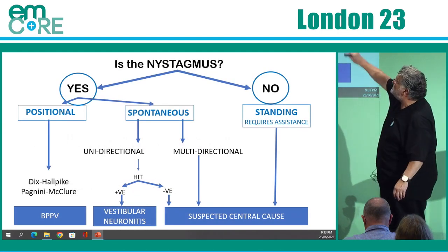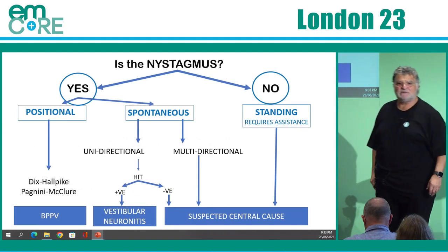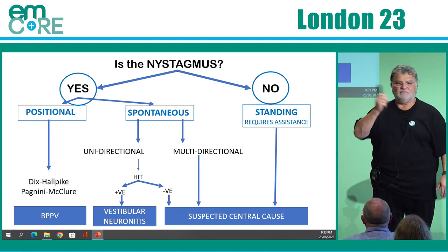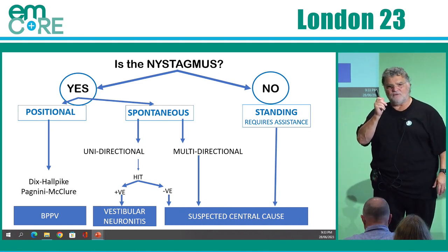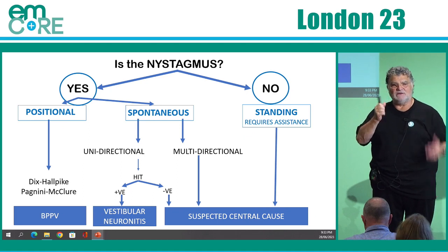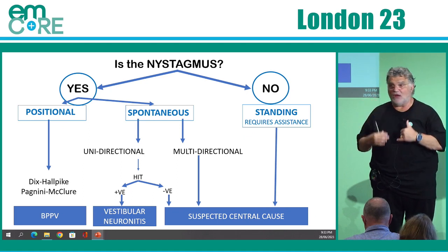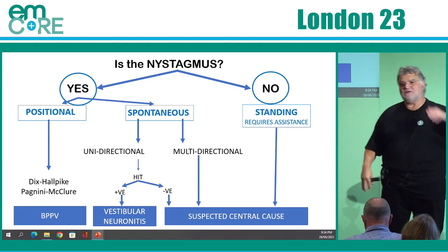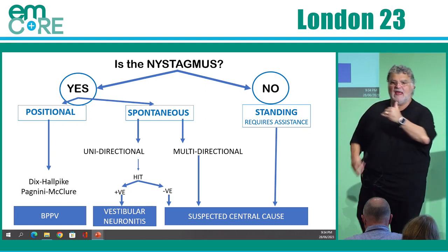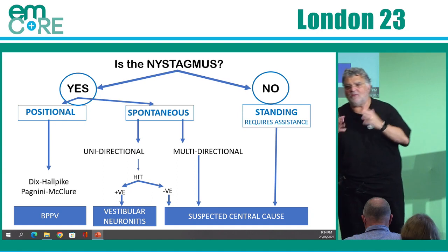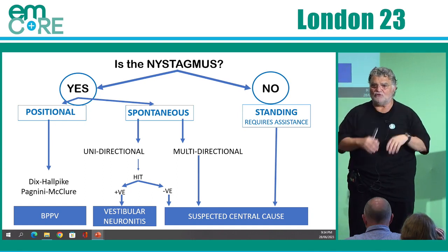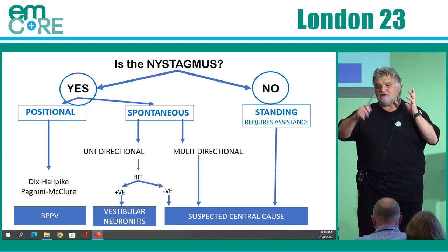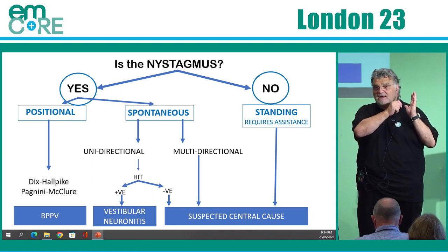Looking at the algorithm, the first question is: is there nystagmus? Nystagmus is the fast movement — greater than three or four beats, so it's maintained and unilateral — that's usually the benign cause. If you have nystagmus that's unilateral and we're thinking about a peripheral cause, so the oculomotor reflex, the ear opposite to the fast nystagmus is the one that's affected.